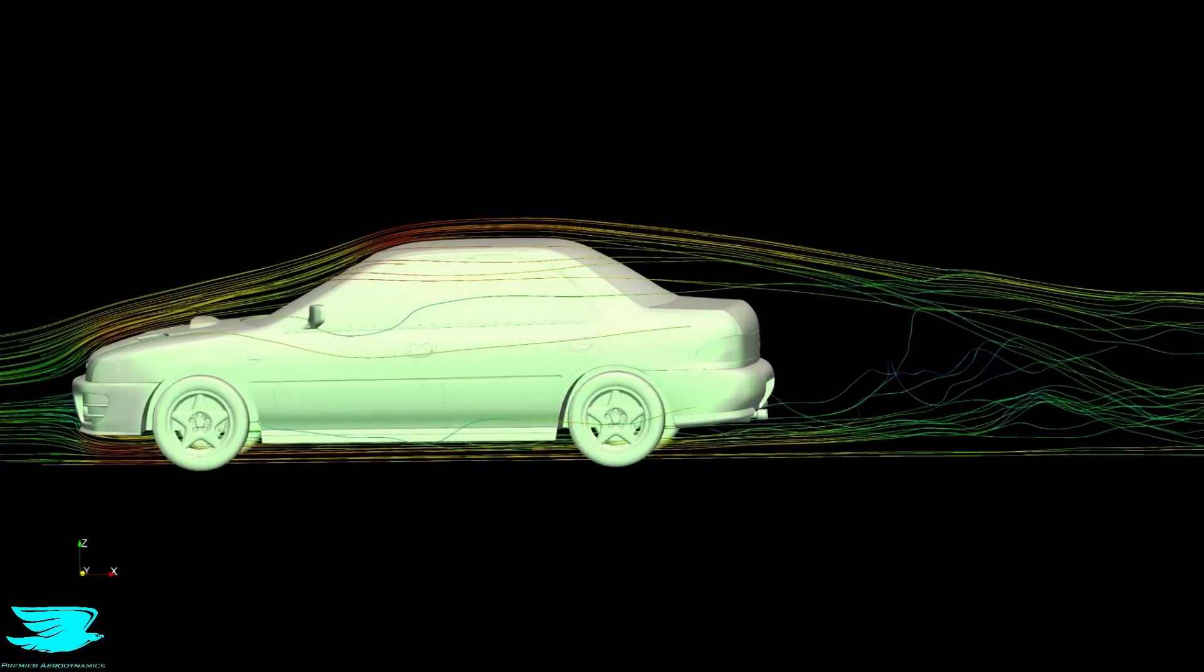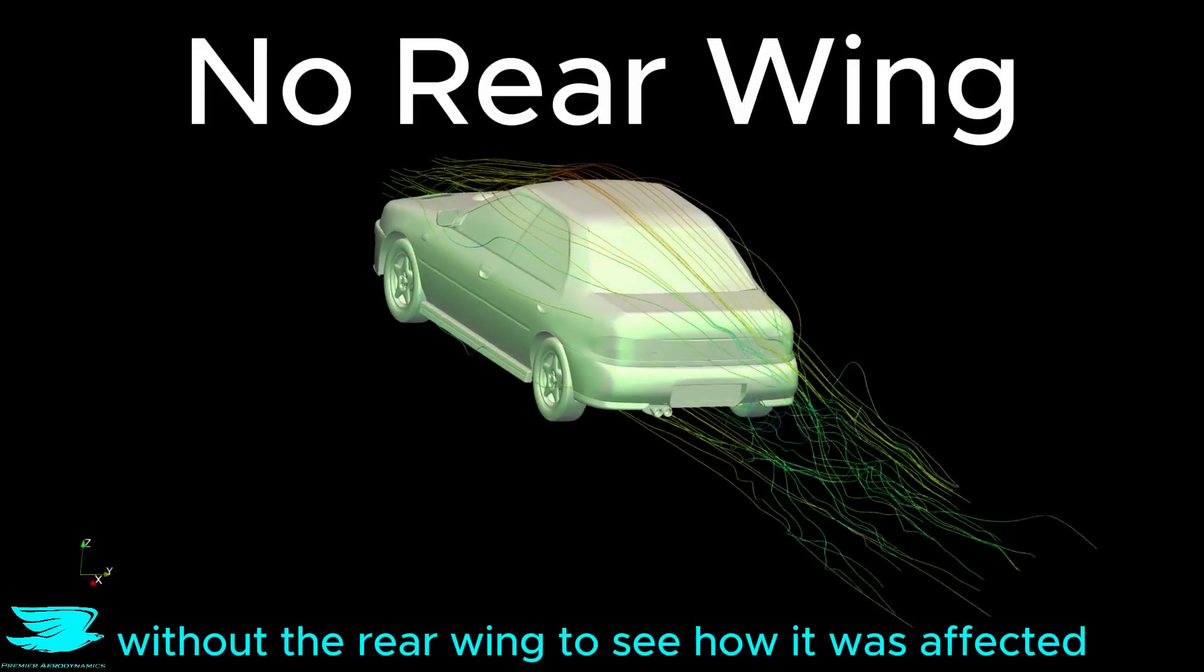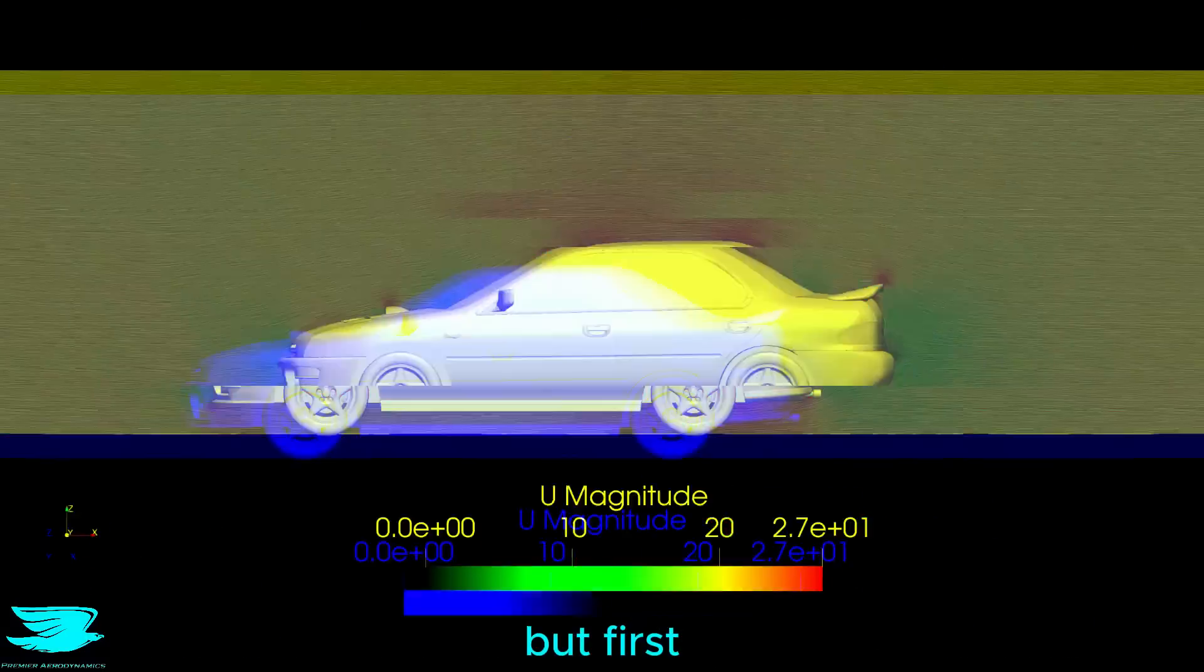So in the second half of this video, we're going to look at the aerodynamics of this car without the rear wing to see how it was affected. But first, with the rear wing.